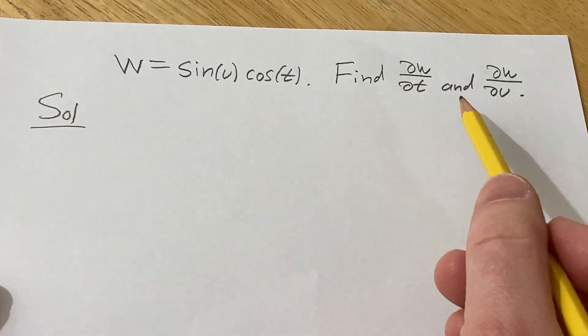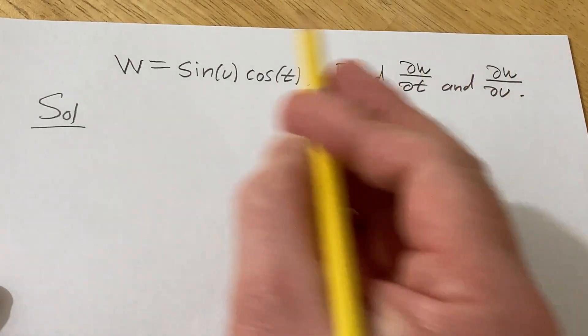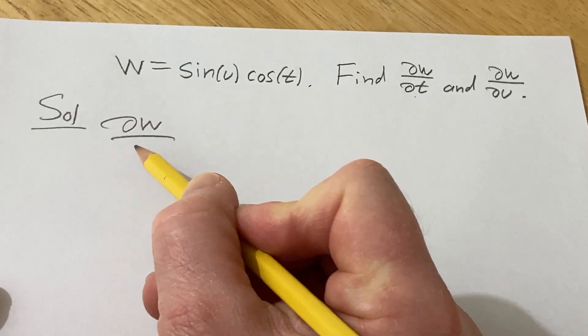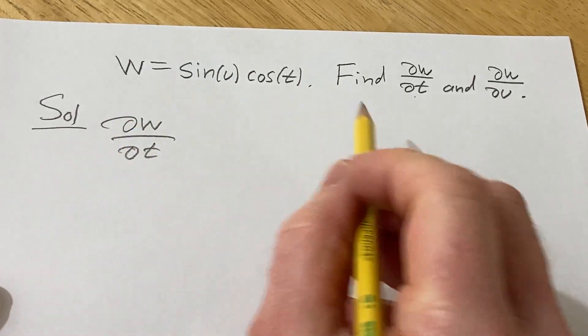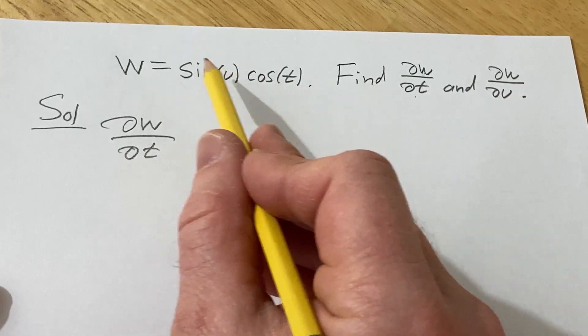When we're finding any partial derivative with respect to any variable, we treat all of the other variables as constants. So when looking for ∂w/∂t, we treat u's as constants. Basically this whole piece here, sine u, we're going to treat it as a constant.